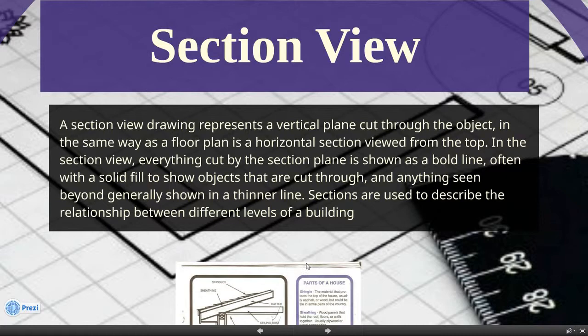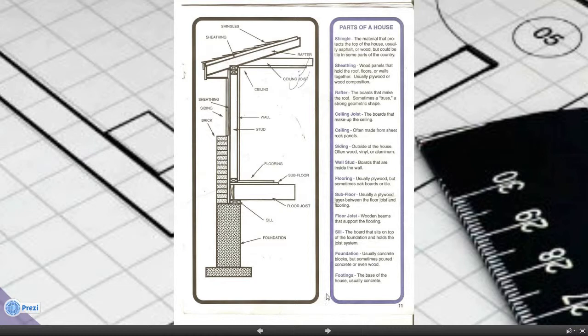You'll see here on this example that we have coming up, this is basically what a single-family house would look like if it was chopped in half, showing the foundation going into the ground, showing the sill, the floor joists, and the flooring.